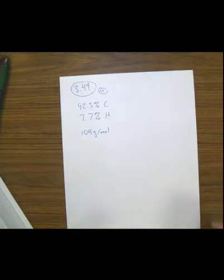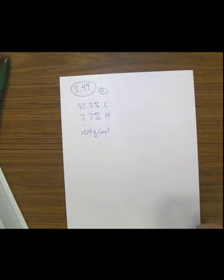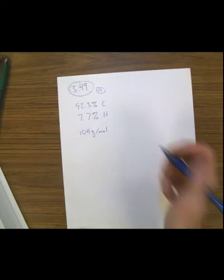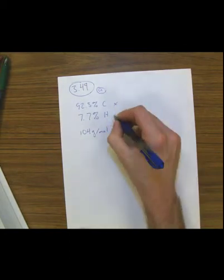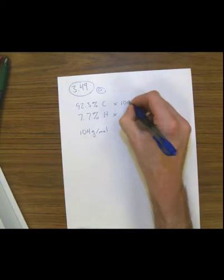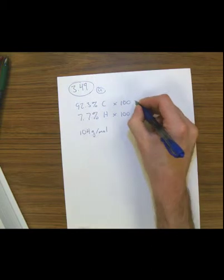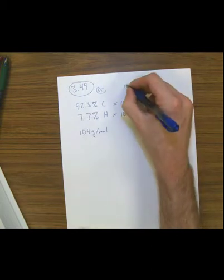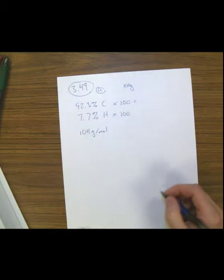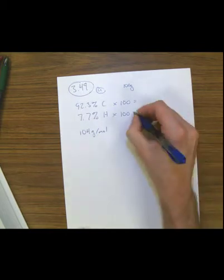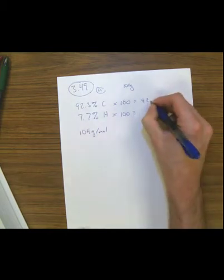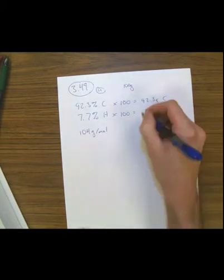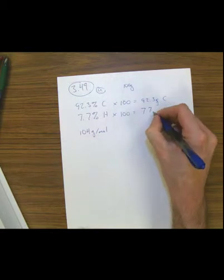Now we're going to follow the steps outlined in the text. If you're given percentages, the best thing to do is assume you're working with 100 grams. So we multiply each percentage by 100, assuming we have 100 grams of styrene. We end up with 92.3 grams of carbon and 7.7 grams of hydrogen.